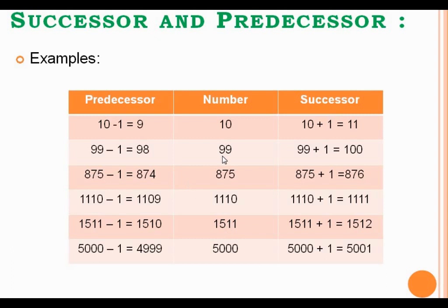Same way, suppose the given number is 99. If you want to find out the successor of 99, you have to just add 1 to 99, so you will get 100. It will be the successor of 99. And if you want to find out the predecessor of 99, you have to just subtract 1 from 99, so you will get 98, which will be the predecessor of the given number 99.